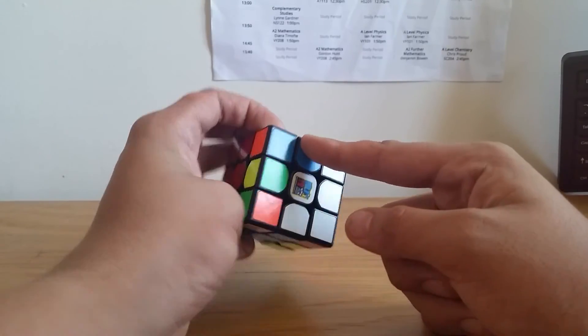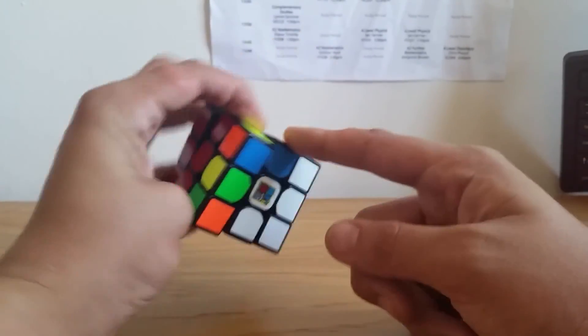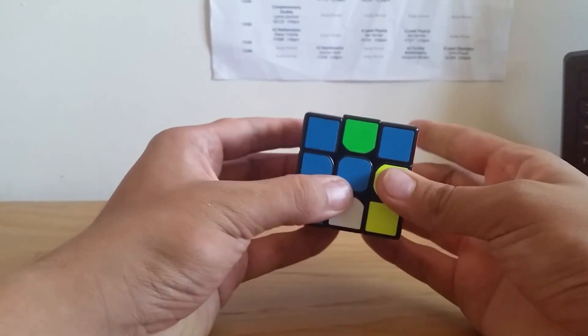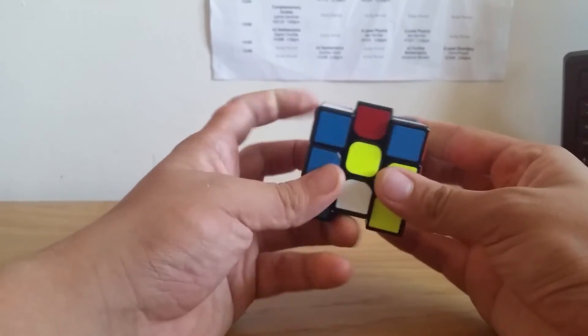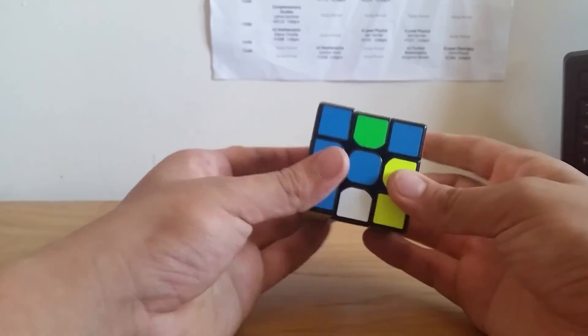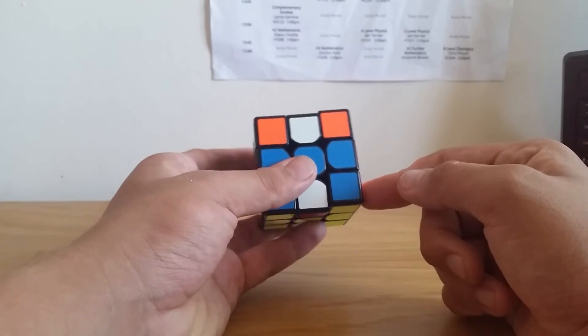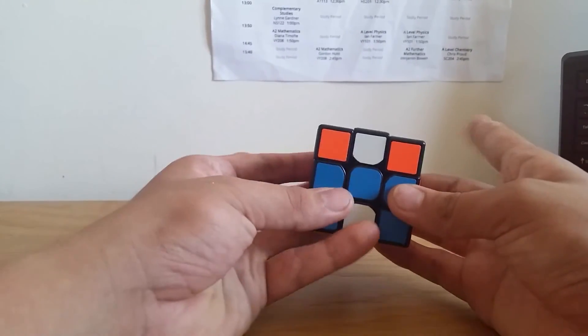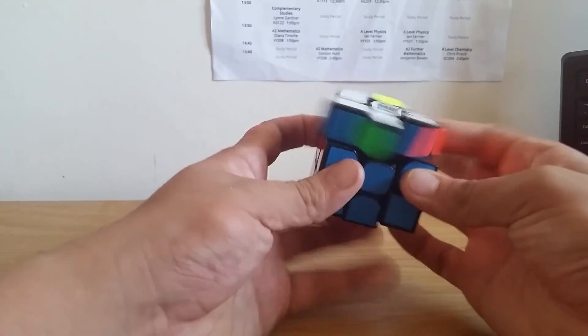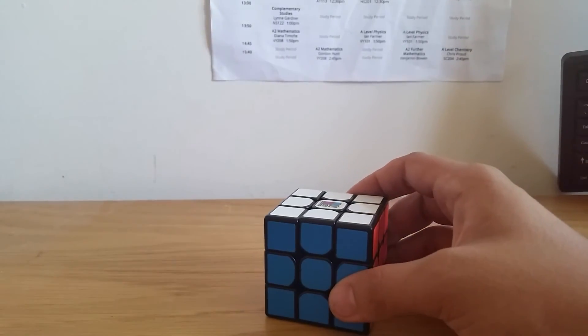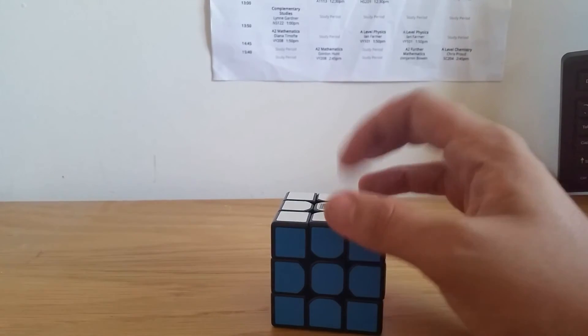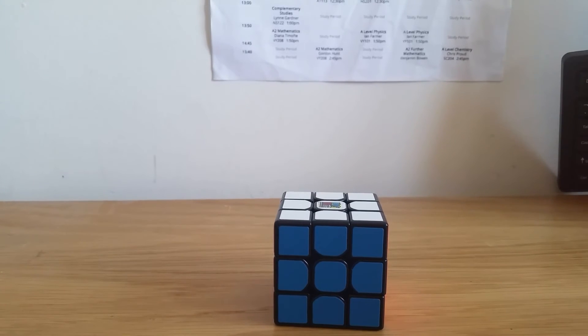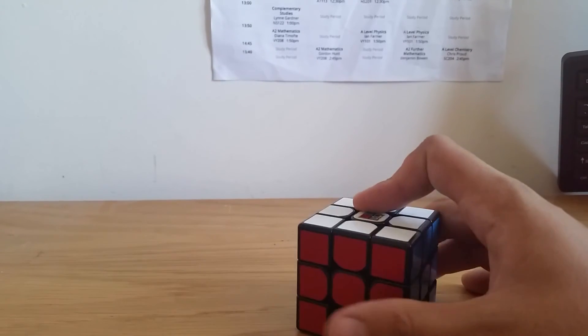And we're going to solve one more edge, which in this case is this one, as you can see. And I'll just do the most basic thing you can do, which is solve that piece and reduce this to a normal LSE case, which would be that. Now, I'm willing to bet that that was less than 45 moves. I'll post the reconstruction in the description, just in case no one wants to count.